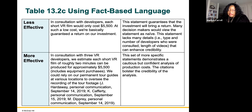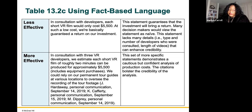Using fact-based language: the more effective version provides a reference to the information rather than just stating it — they provide a citation, and that's the difference. Document secondary research and avoid plagiarism by providing a reference list at the end of the report containing all your sources. Provide citations to indicate the information you have drawn from other sources. There are a variety of documentation systems, including APA and MLA.